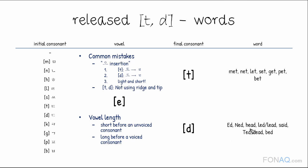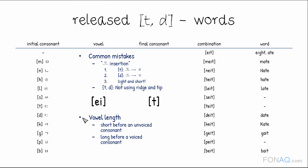Vowel e with final t and d. Vowel a with final t: eight, mate, nate, hate, late, date, Kate, gate, bait.